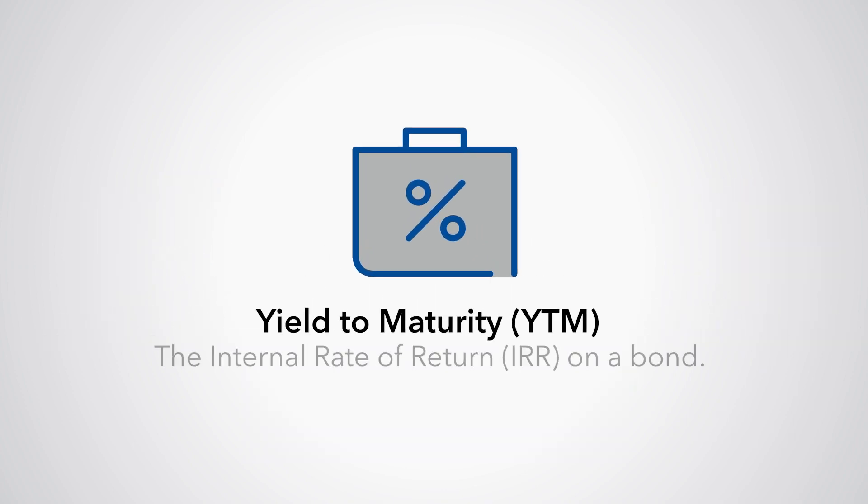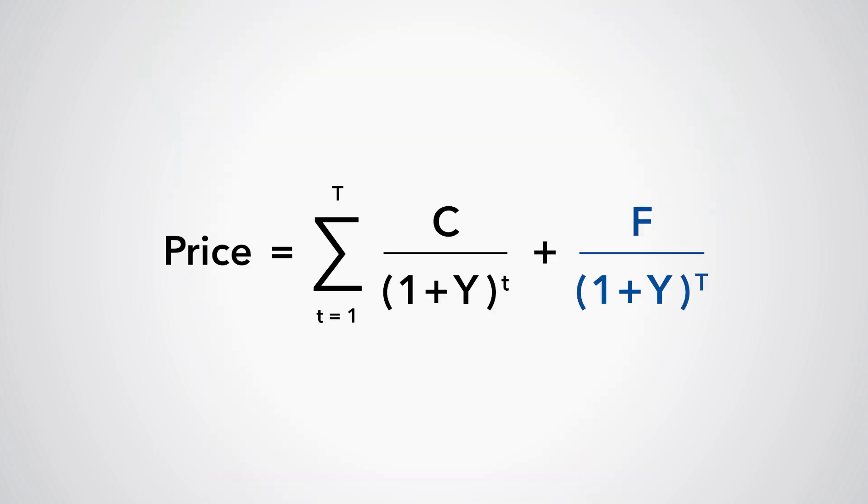In finance terms, the yield to maturity is the internal rate of return on a bond. Unfortunately, we cannot calculate the yield on a bond with more than one cash flow algebraically. We can use an equation to explain how we might calculate the yield on a bond.